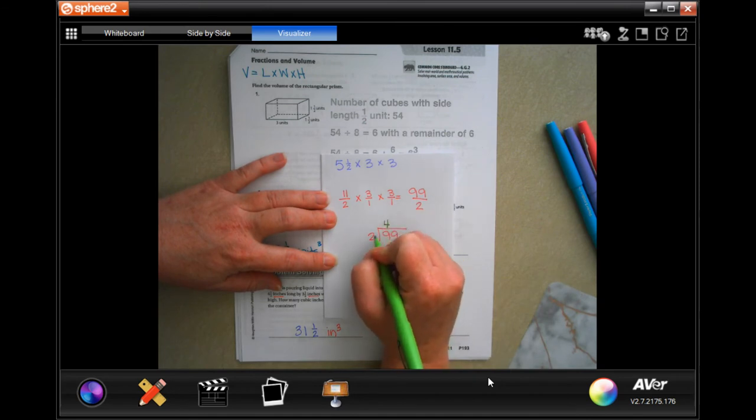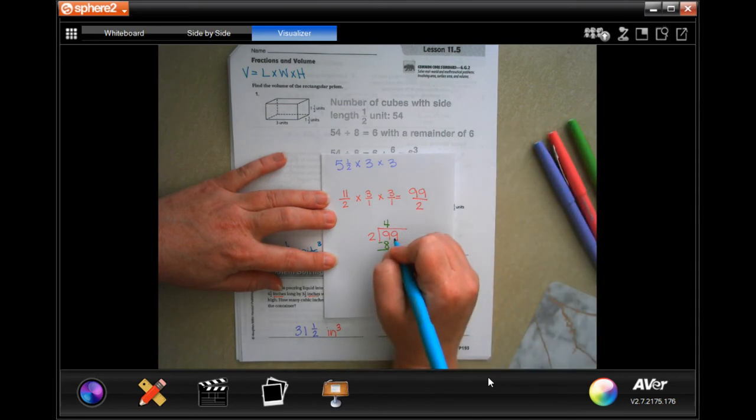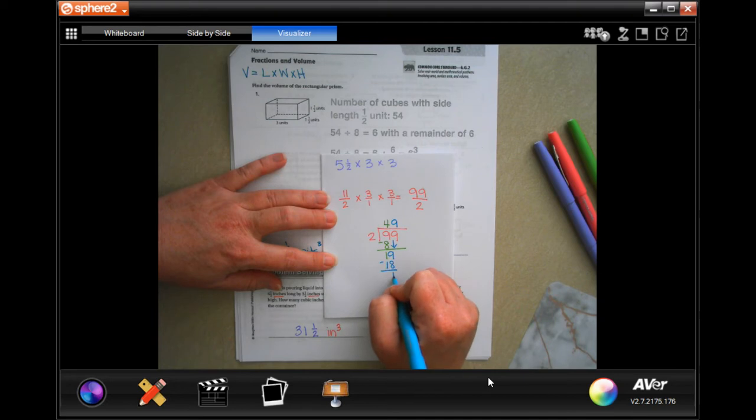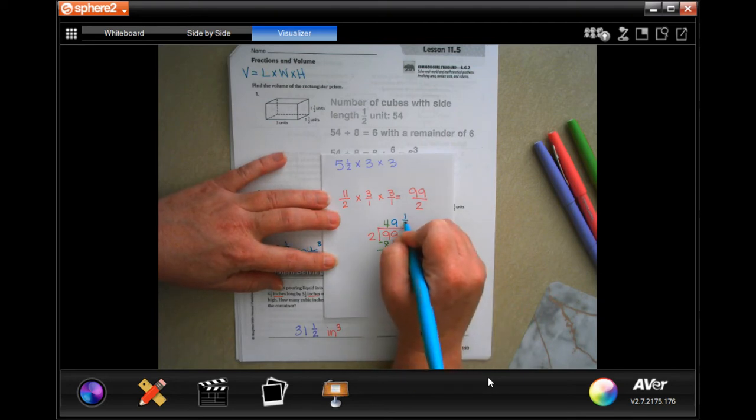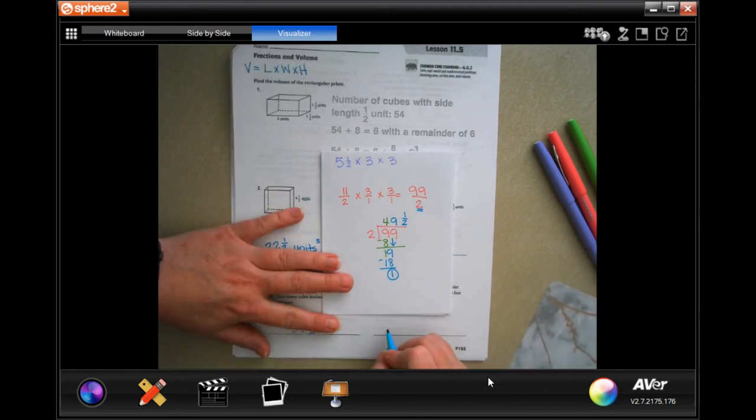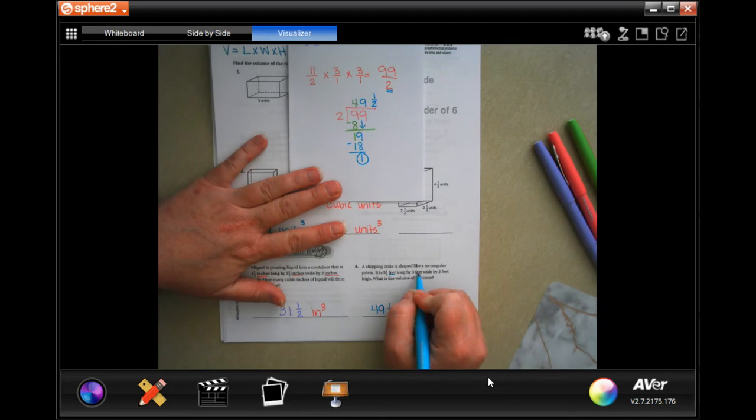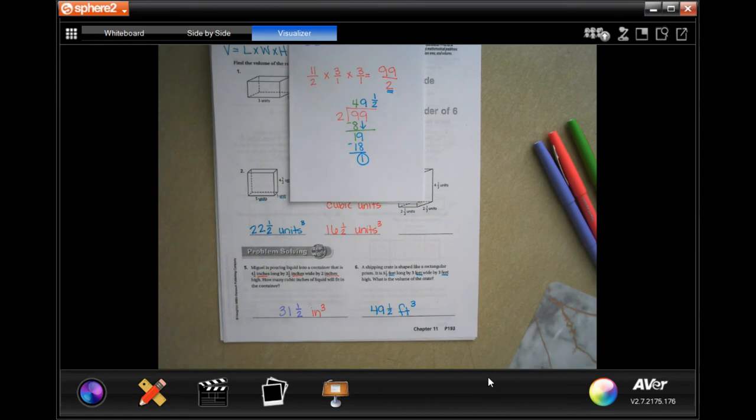So, 11 times 3 is 33, times 3, well, 3 times 3 and 3 times 3, that's 99. And my denominator is 2 times 1 times 1, which is 2. 99 inside the box, 2 outside. 2 goes into 9, 4 times. 4 times 2 is 8, subtract, get 1. 1 is smaller than 2, so I'm going to bring down my 9. 2 goes into 19, 9 times. 9 times 2 is 18, subtract, get 1. That 1 is my numerator, and I keep my denominator. So, 49 and a half, feet by feet by feet, so feet cubed. You can absolutely write out cubic feet if you want to. I don't. I'm not enjoying my own handwriting that much.